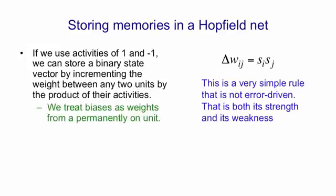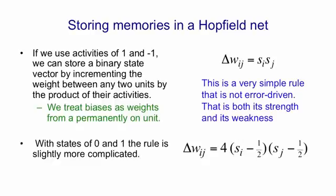We can also have biases, and as usual, we treat the biases as weights from a permanently on unit. If you want to use states of 0 and 1 for units, which is what we'll use later, the update rule is only slightly more complicated.